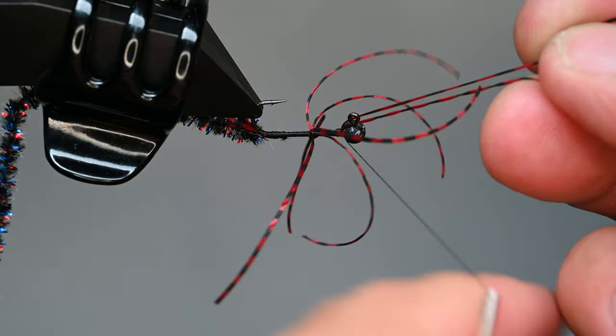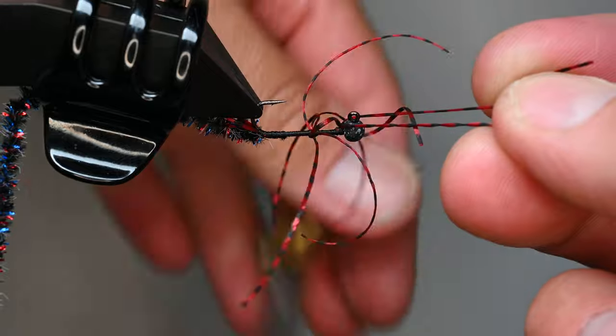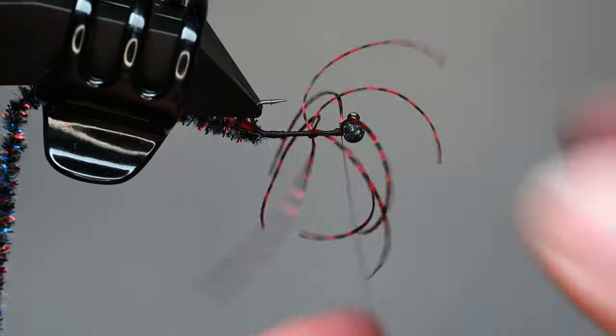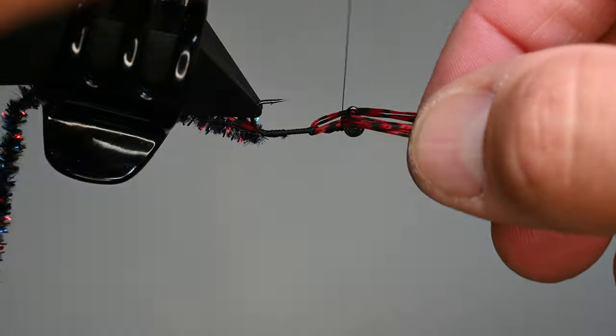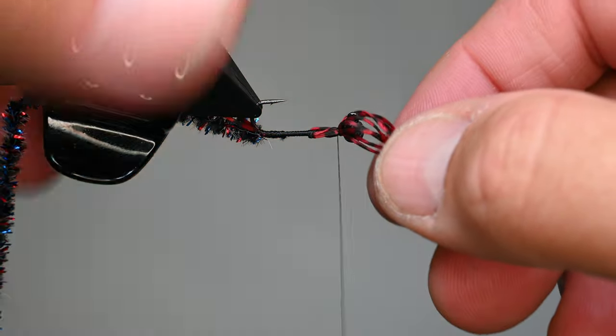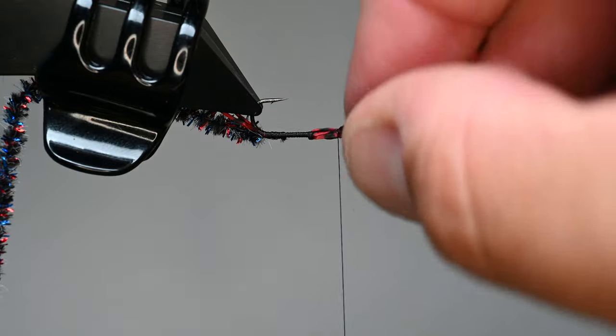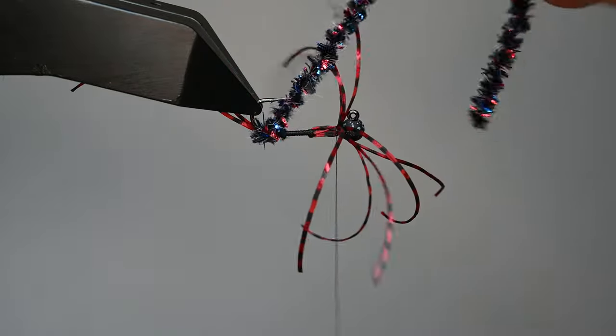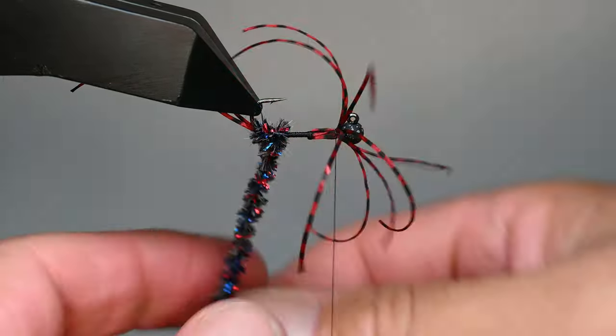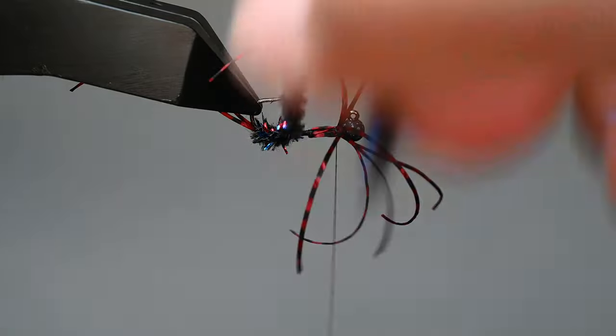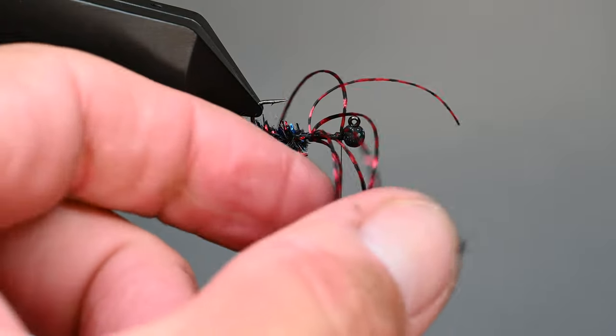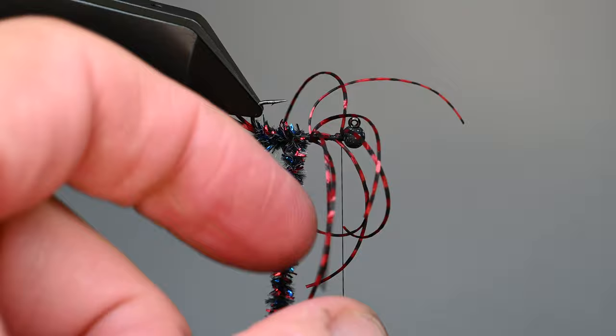That way we're working with one side at a time. I'm just figure-Ving it and wrapping that thread so that it's coming towards me, so we're building up almost like you're doing a parachute post on it if that makes sense. If you've tied a parachute Adams, we're just working our way up those legs almost like you're building a post. So they're going to be going out to each side of this fly. You can see now we've got a nice little thread base right there. That's going to be super fun to work with and work our chenille through, but patience on this fly is worth it.